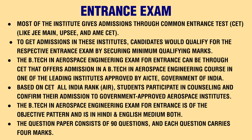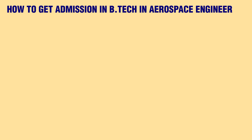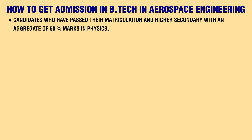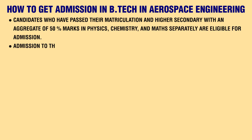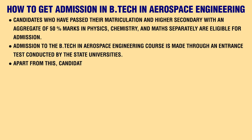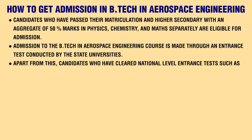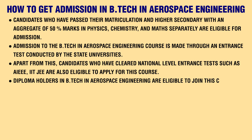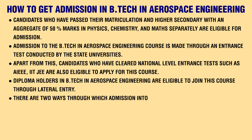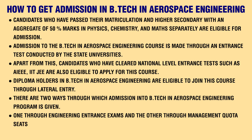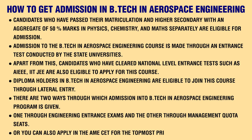How to Get Admission: Candidates who have passed their matriculation and higher secondary with an aggregate of 50% marks in Physics, Chemistry, and Maths are eligible. Admission is made through entrance tests conducted by state universities. Candidates who have cleared national-level entrance tests such as AIEEE or IIT JEE are also eligible. Diploma holders are eligible to join through lateral entry. Admission is given either through engineering entrance exams or through management quota seats.